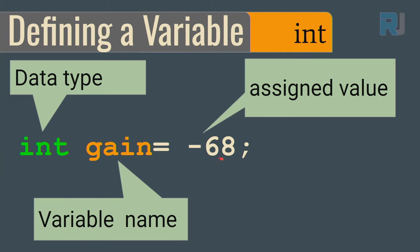If you want to use just one character — a dollar sign, percent, alphabet, or alphanumeric — we use char. Some people also pronounce it as 'char'. The data type is written as char with a small c-h-a-r, then the variable name, and we put the assigned value in single quotes — that refers to one character. When you need to work with money or any decimal value, we use float with a small f, give it a variable name such as price, and assign the value.